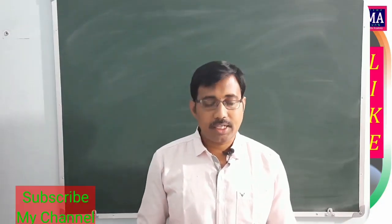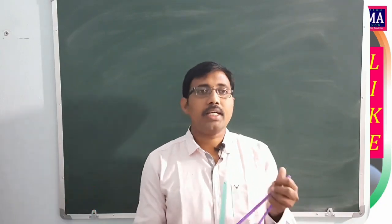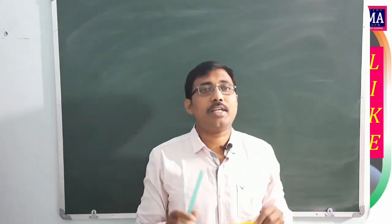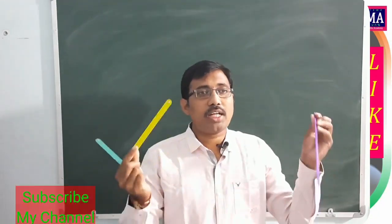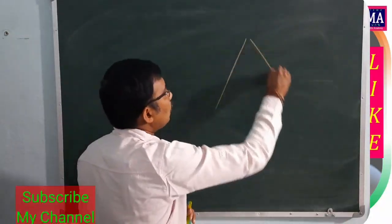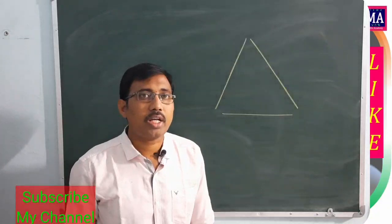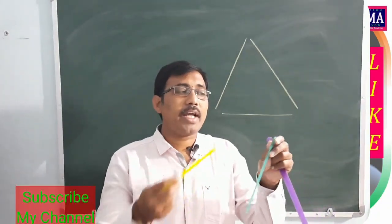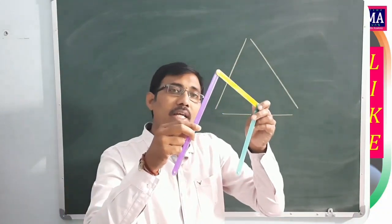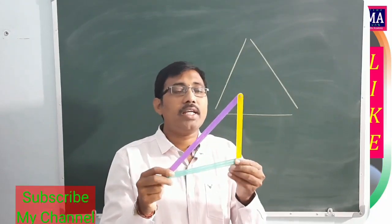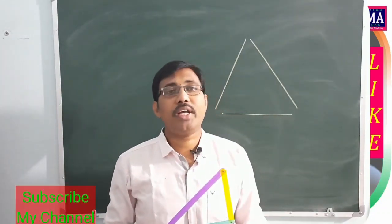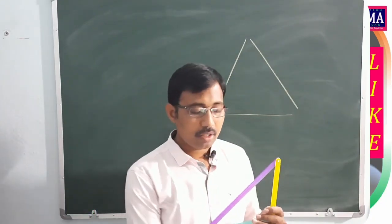For example, take three different line segments of different lengths — one, two, three. These three line segments form a closed figure, and that is a triangle. A triangle is formed by only three line segments.